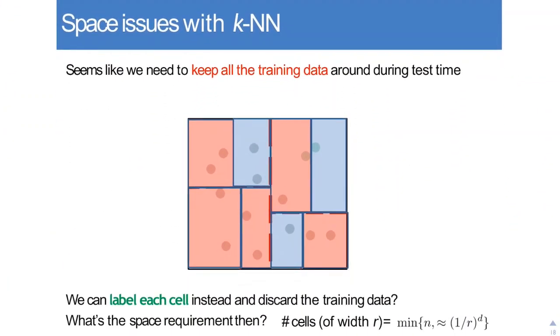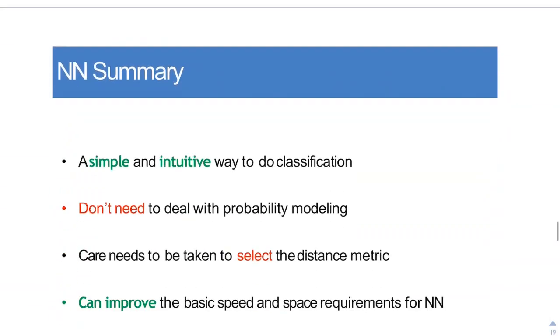And the answer is yes. Instead of keeping all the training data, we can label the cells according to the majority class of the data in that particular cell. So if a cell has five points and four of them are red, we just label the whole cell as red. If any test point lies in that particular region or cell, the test point will get labeled as red. The space requirement now reduces from the number of data points to the number of cells.